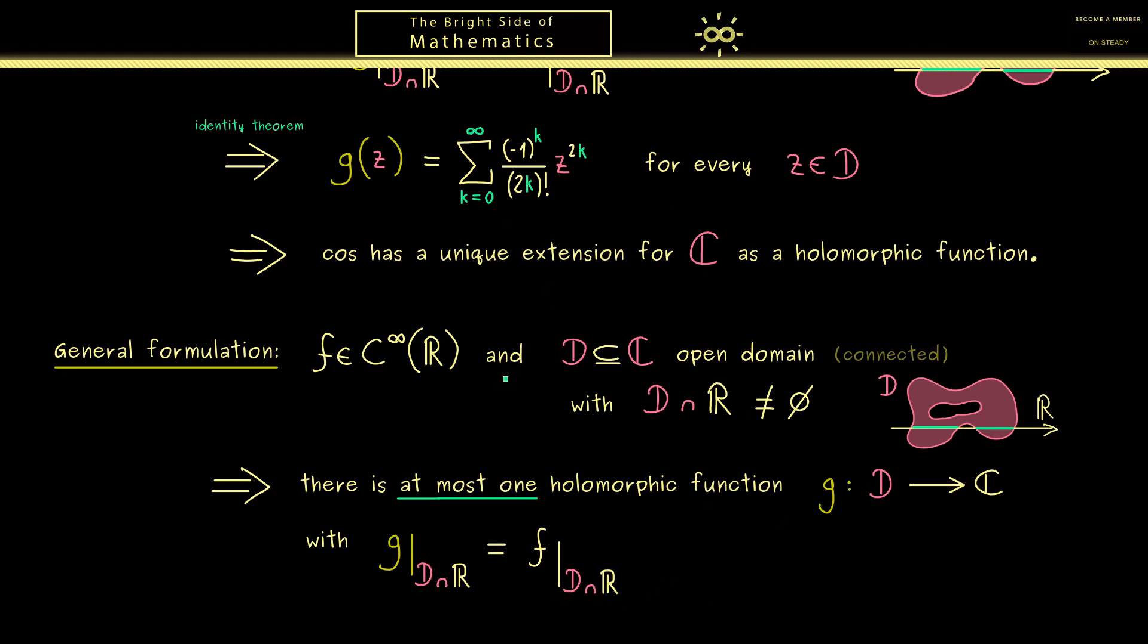For example, if we have a power series in R for f, we have the same power series for g in C. Simply because the power series is always a holomorphic extension, and now we know it's the only possible one. This is an important fact because a lot of important functions in R are given as power series. This all follows from our nice identity theorem.